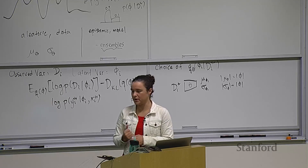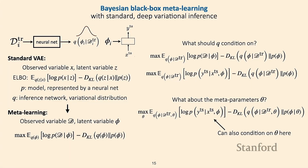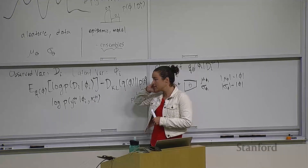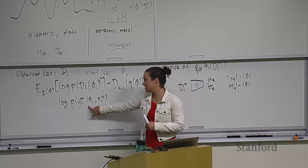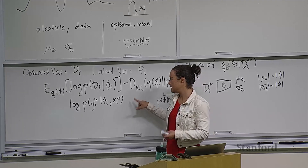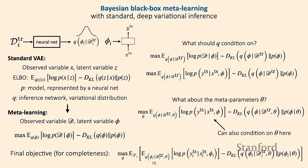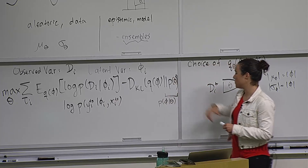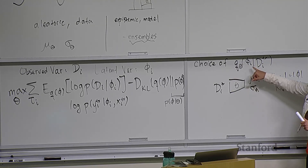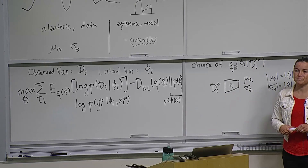You could also incorporate meta-parameters into the function making predictions — for example, if you're using an RNN with weight sharing between meta-parameters and task-specific parameters. The final objective sums over tasks i, maximizing with respect to meta-parameters, optimizing how well task parameters solve the task and also optimizing so the inferred distribution over task-specific parameters matches some prior distribution.